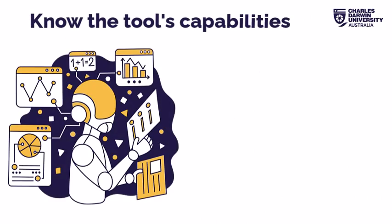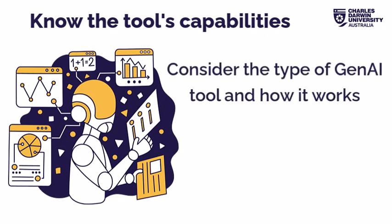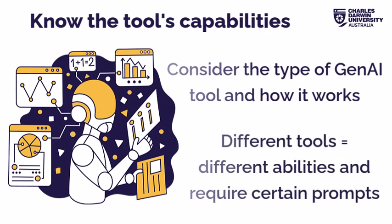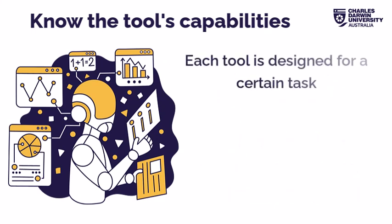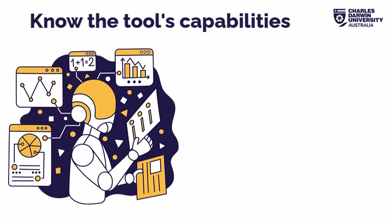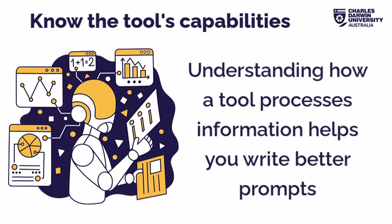The first step is to know the capabilities of the Gen AI tool you're using. When writing a prompt, it's important to consider the type of Gen AI tool and how it works. Different tools have different abilities and require certain prompts. It is crucial to understand that each tool is designed for a specific task — expecting one tool to perform a task outside of its design will not turn out well. For example, you wouldn't ask a text-based Gen AI tool to draw a picture, or an audio-based tool to write a paragraph. By tailoring your prompts to match the tool's capabilities, you increase the chances of getting accurate and meaningful responses.